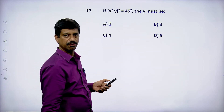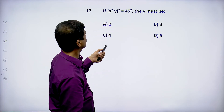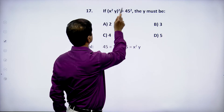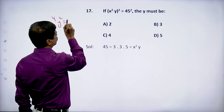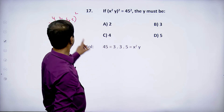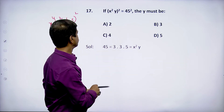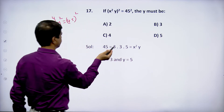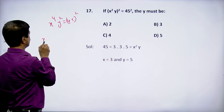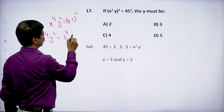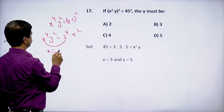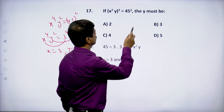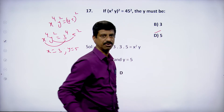Next question: (xy²)² = 45². Find y. Expanding: x^4 · y² ... actually x^4 · y² = 45². Writing 45 = 9·5 = 3²·5: so 45² = 3^4 · 5². Therefore x = 3 and y = 5. Option D satisfies — y = 5.